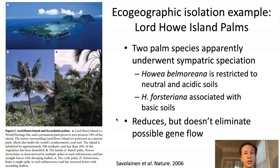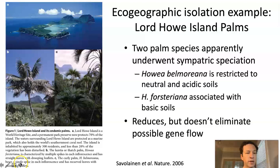Geographic isolation is easy to understand — if a seed gets dispersed from Asia to North America, once established there it's unlikely that pollination will occur across the ocean, so those two populations have the chance to become different species. Let's move on to the slightly harder one: ecogeographic isolation. I'll show you a reasonably new example from around 2006 of where this has happened even within one small island.